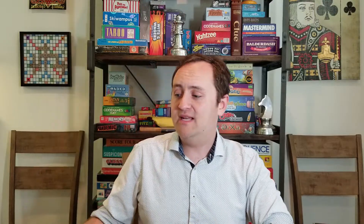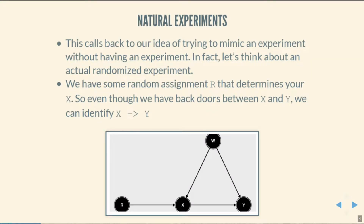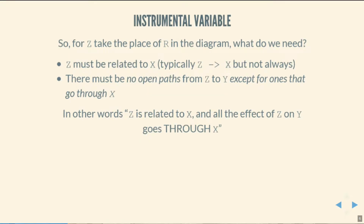The cool thing about instrumental variables is that they have a very recognizable causal diagram. When we have an instrumental variable, it tends to follow a pattern like this. We have some x that we're interested in for its effect on y. We have some back door that keeps us from just looking at the relationship — maybe we can't measure w and control for it, or there are just too many w's. But we have some r, which stands for randomization. r affects x — it affects whether or not we get the treatment. But it does not affect y except through x. There's no path from r to y that does not go through x. That's what makes this an effective instrumental variable.